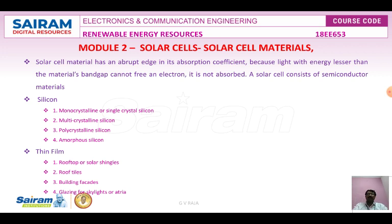Polycrystalline silicon is made by a casting process where molten silicon is poured into a mold, allowed to set, and then wafers are sliced from it. These cells are significantly cheaper to produce but not as efficient as monocrystalline silicon cells. The lower efficiency is due to imperfections in the crystal structure that result from the casting process. Amorphous silicon is a thin-film technology made by depositing silicon onto a glass substrate, and this type of solar cell can be applied to low-cost substrates like glass or plastic materials.